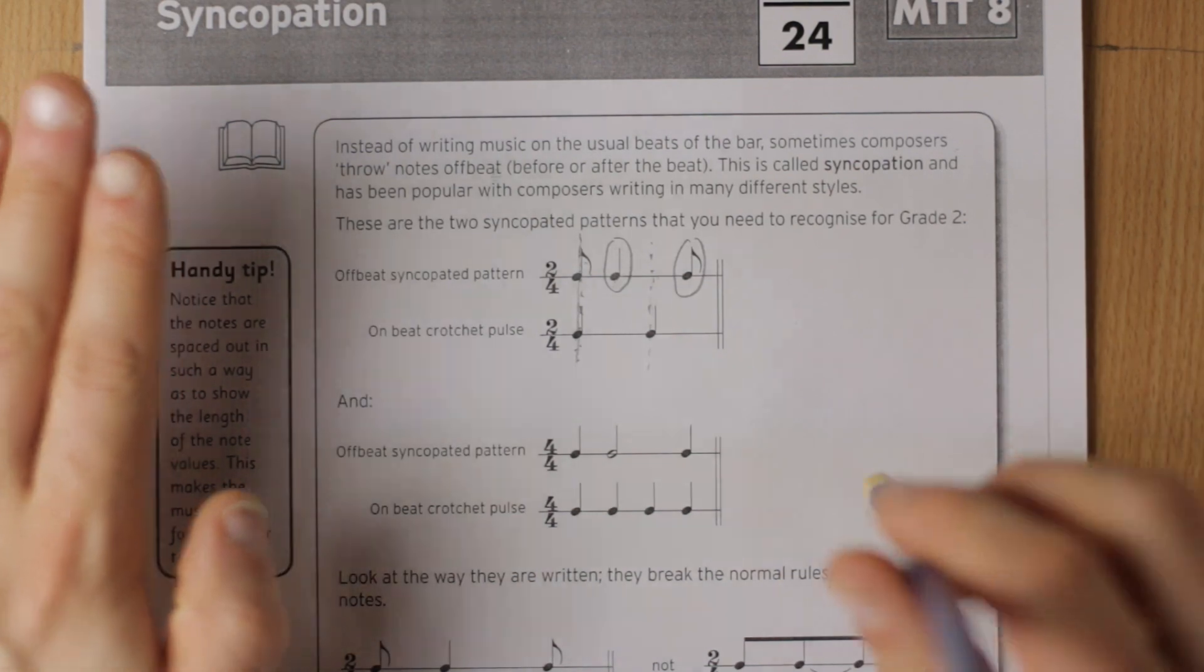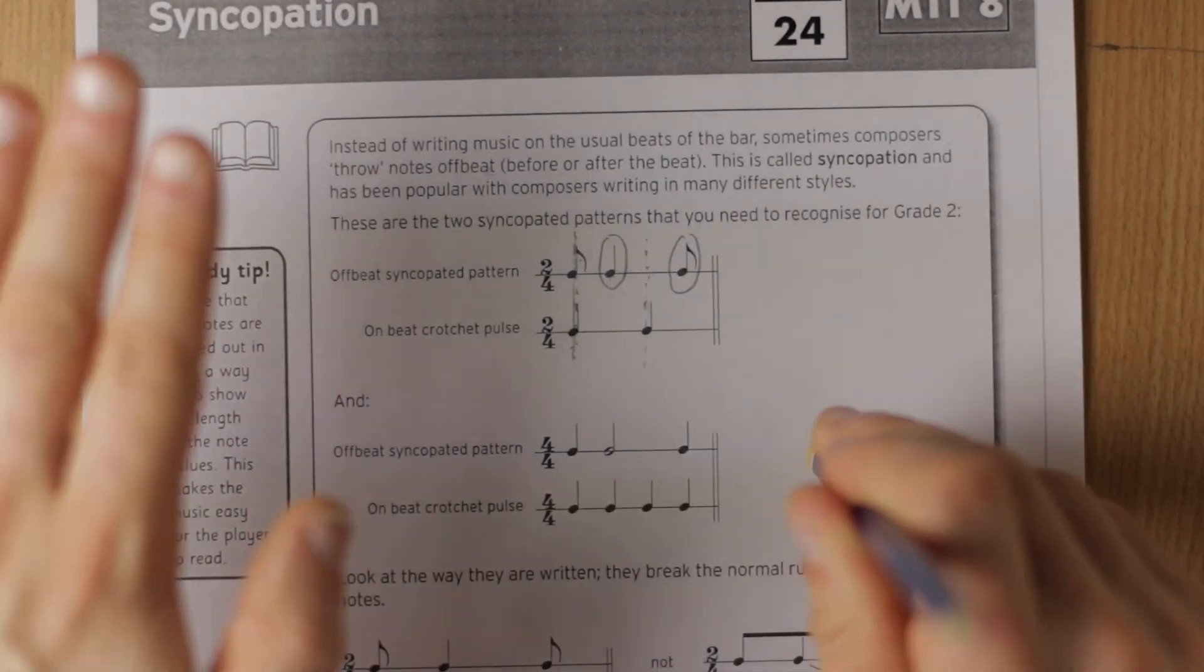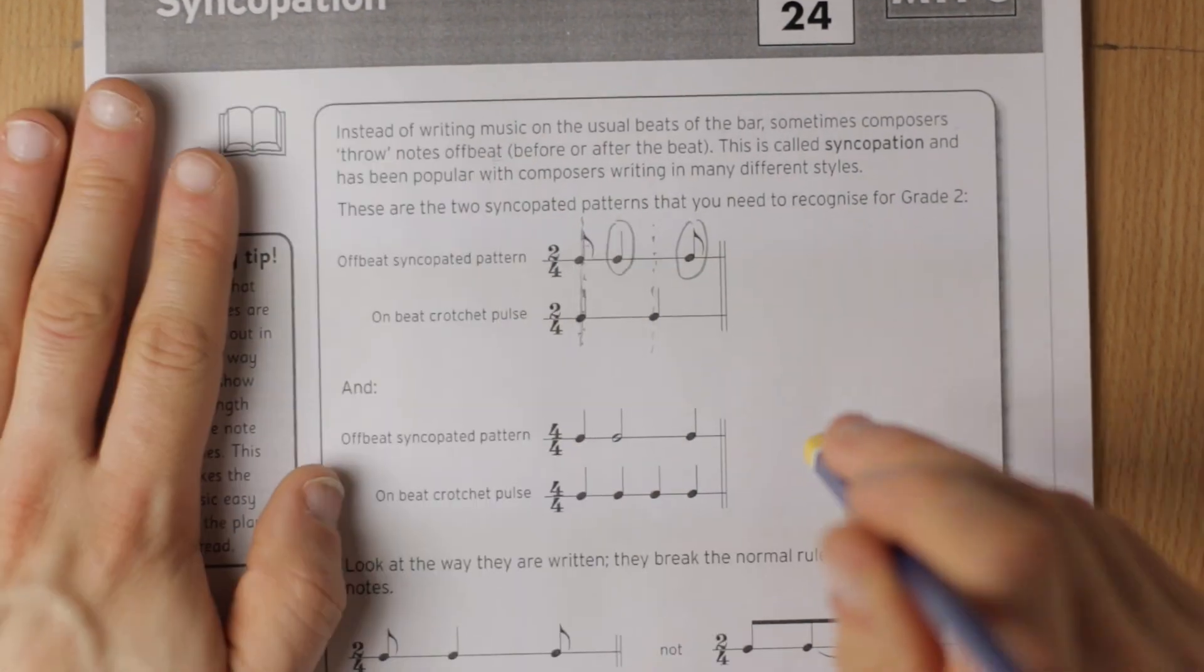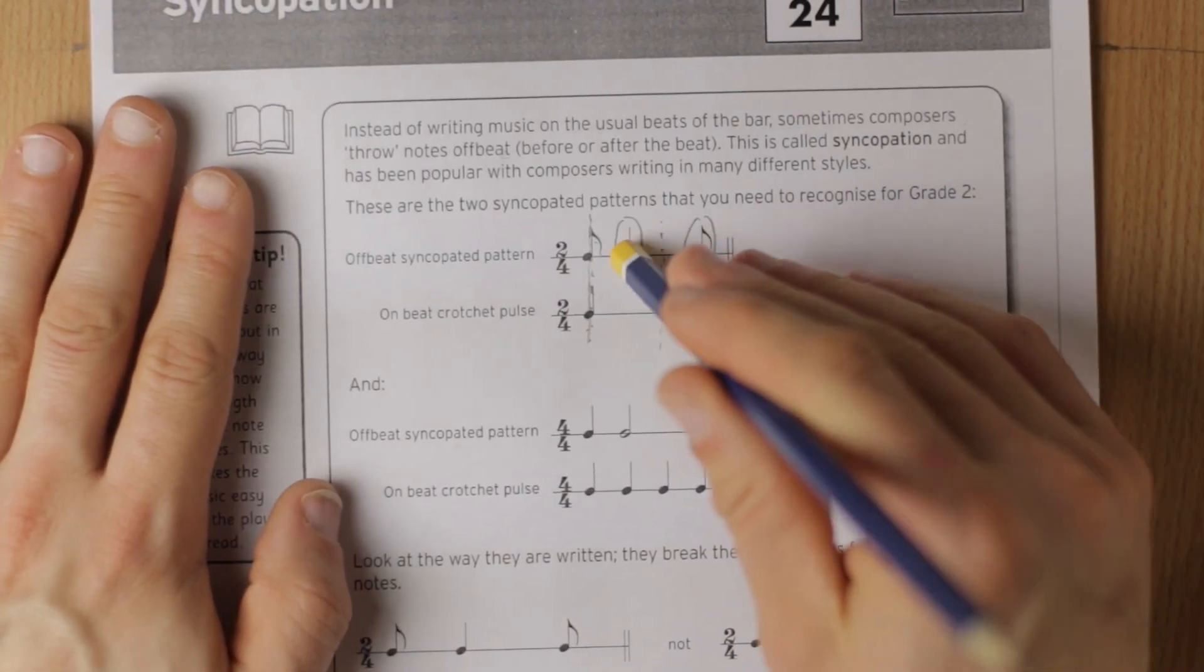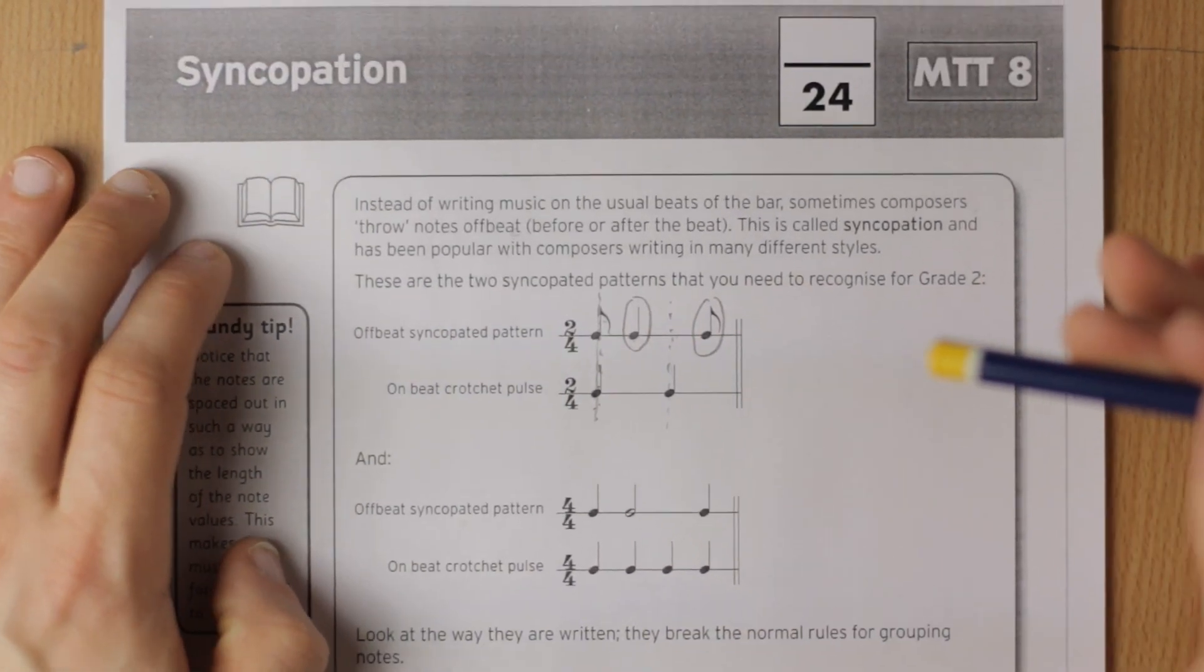One, two, and this is the rhythm: one, two, one and and. So one and two and. We've got these notes that come in between the beat.